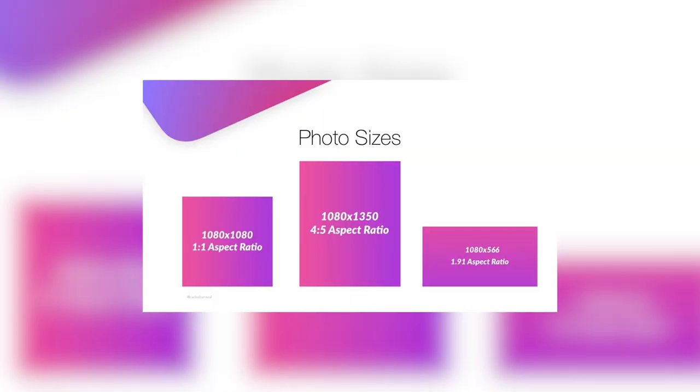Uploading your photos at the best quality resolution possible in Instagram terms means up to a width of just 1080 pixels. If you upload an image between 320 and 1080 pixels, no resizing will take place, as long as your aspect ratio is between 1.91 to 1 and 4 to 5 — it'll appear on Instagram without compression.